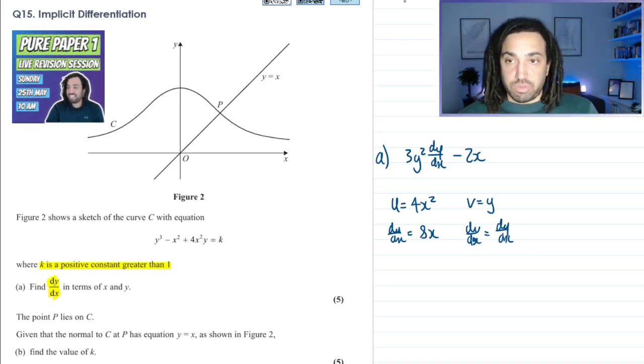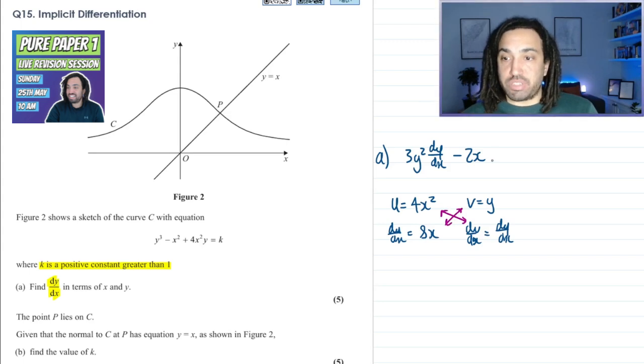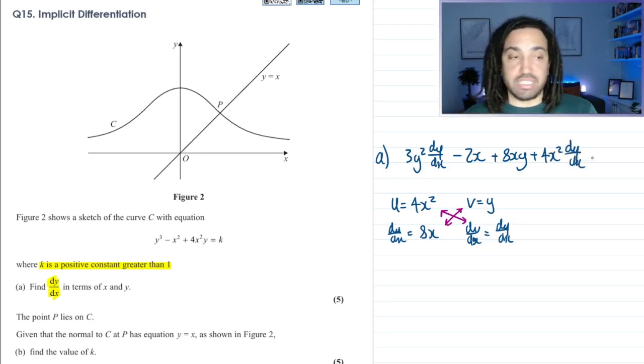So doing the product rule means that we need to cross multiply here and here, and then add the two together. So this is going to give us 8xy, and it's going to give us plus 4x squared dy/dx. That's equal to the right-hand side differentiated. Well, k is a constant, so it's going to differentiate to 0.